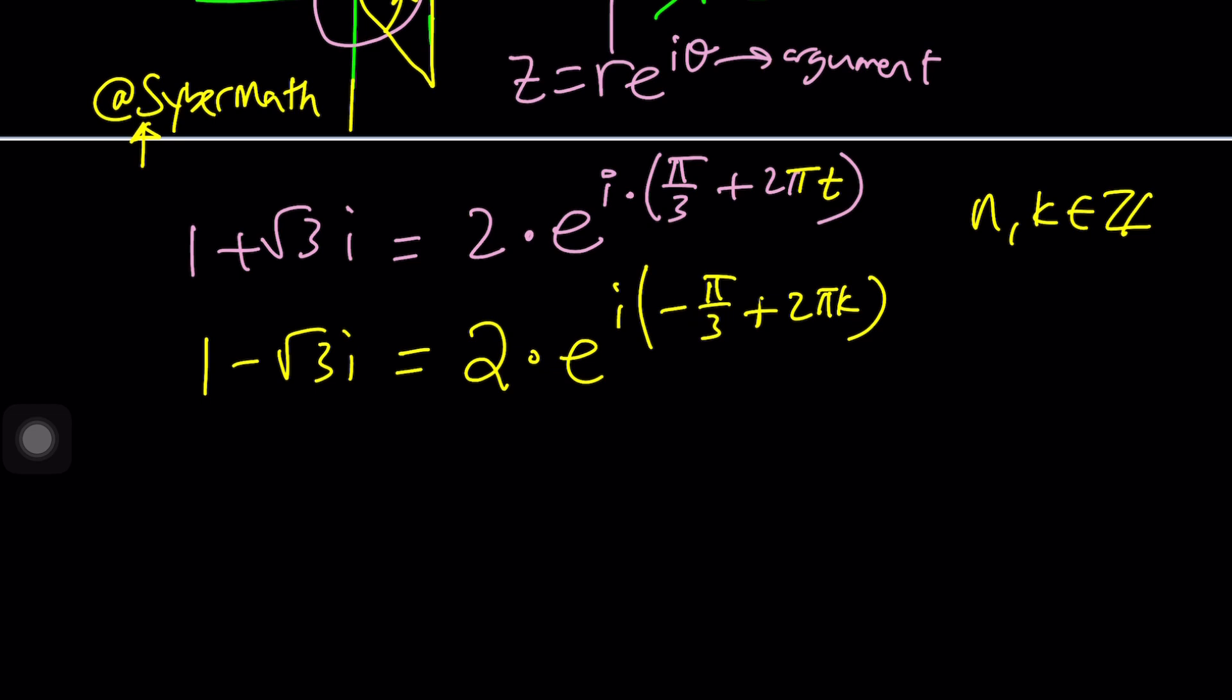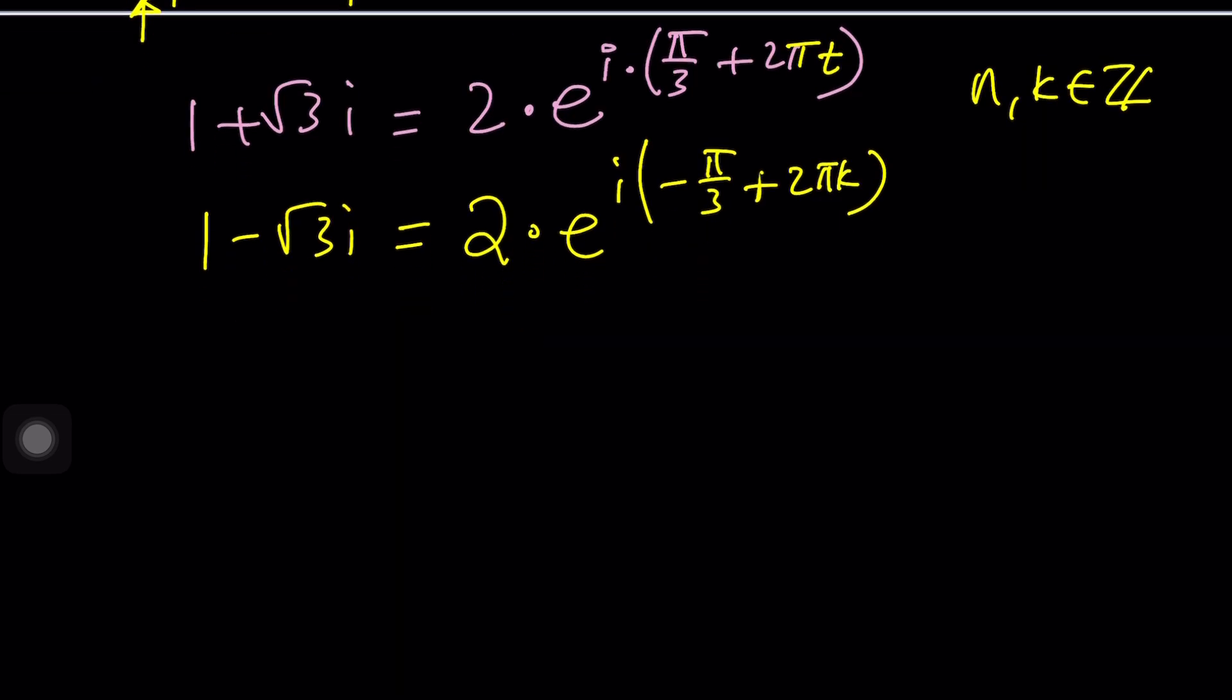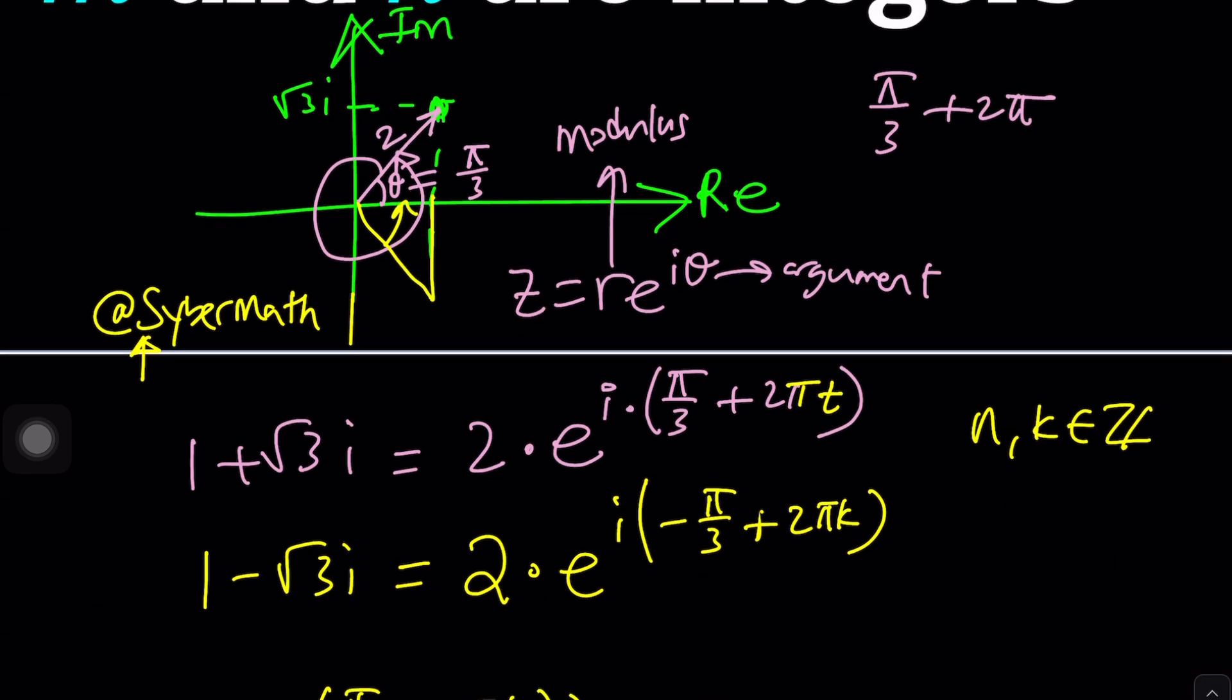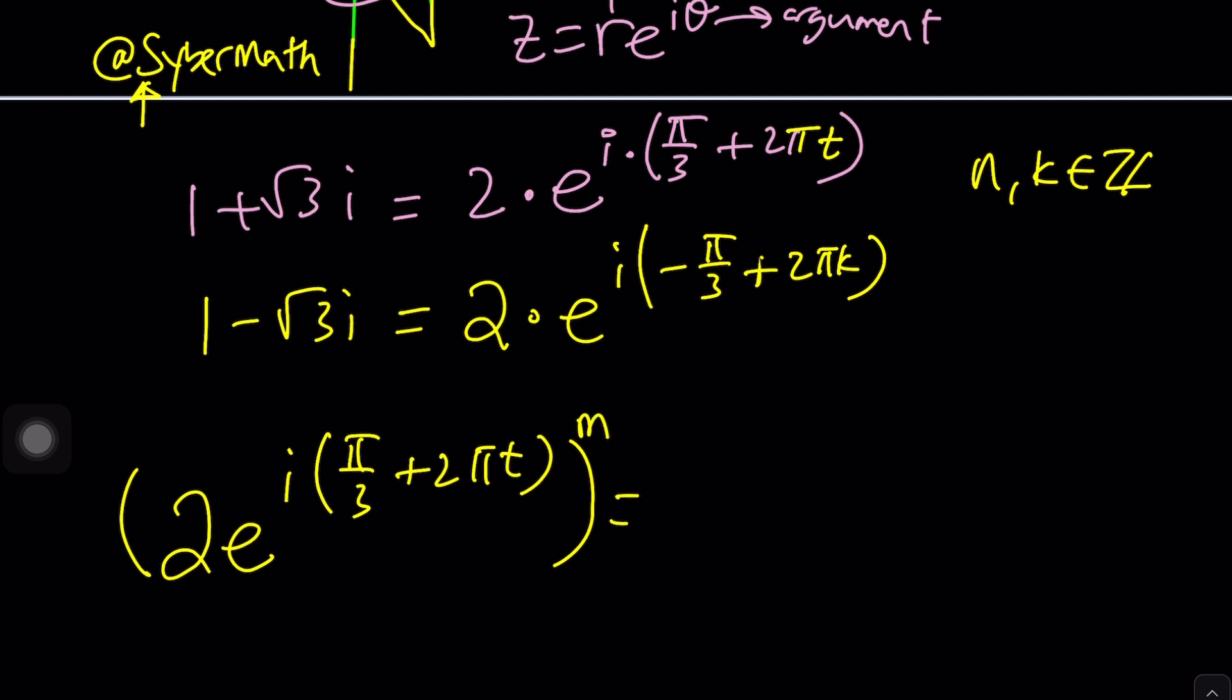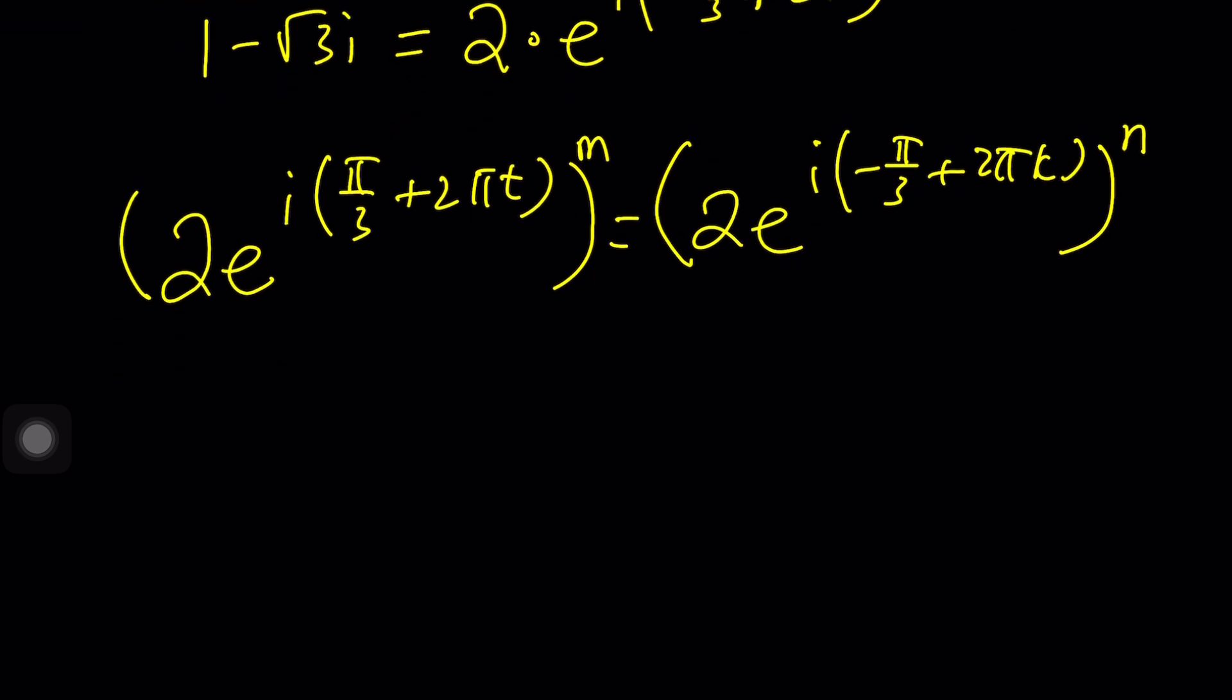I'm not a coffee person by the way if you are wondering. Anyway so let's go ahead and do this. We have 2·e^(i(π/3 + 2πt)). We're going to raise it. Remember the first number on the left hand side, we're going to raise it to power m and the other number which is this one, the second one, we're going to raise it to the power n, right? m and n are integers. Remember that.